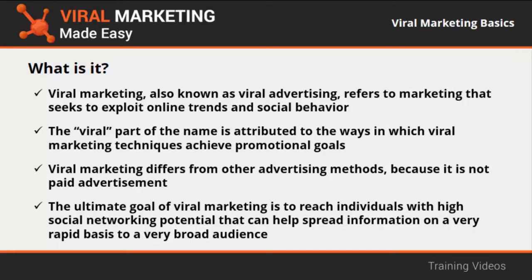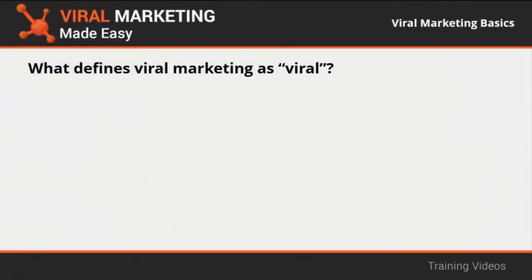The ultimate goal of viral marketing is to reach individuals with high social networking potential that can help spread information rapidly to a very broad audience. What defines viral marketing as viral? Viral marketing that works needs to meet three specific criteria to transform an ordinary message into a viral one. The first is having the right messengers — three types of messengers intervene in the process of causing information to go viral.